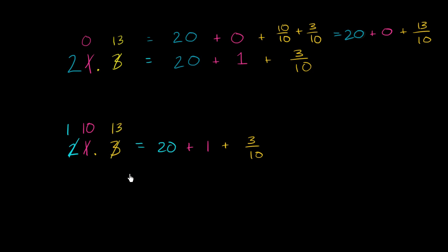So what did I just do? Well, I could rewrite this. Let me be clear what I did. This is the same thing as 1 plus 9, actually let me write it this way. 1 plus 9 plus 1. That's obviously the same thing. Let me be 10 plus 9. 10 plus 9 plus 1 is the same thing as 20. And we're going to have what we have in our ones place, plus 1 plus 3 tenths.